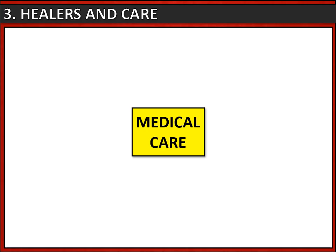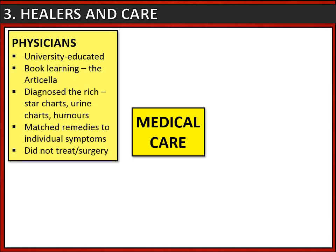If you did fall sick, there were a variety of different healers and places to get care, depending on what you could afford. Physicians were the most expensive — university educated, trained by the church, few in number, and charged a high fee. Their training was based on book learning, particularly the Articella, full of Roman and Greek ideas. Their main role was diagnosing disease for rich fee-paying patients, mostly from a distance using star charts, urine charts, and the humours. They matched remedies to individual symptoms rather than treating the disease as a whole, and did not perform surgery themselves — many were clergymen for whom drawing blood was seen as wrong.